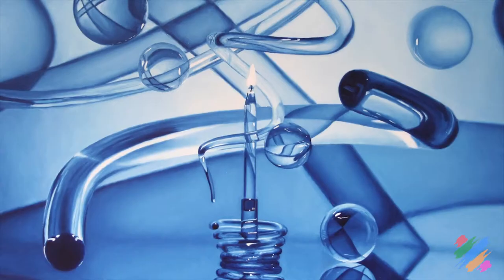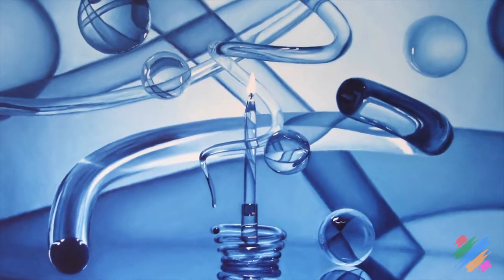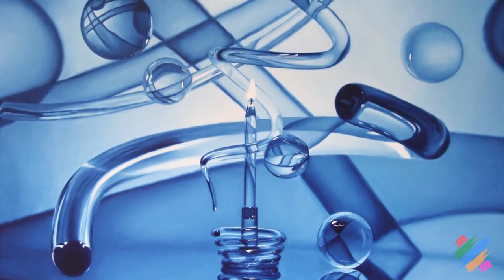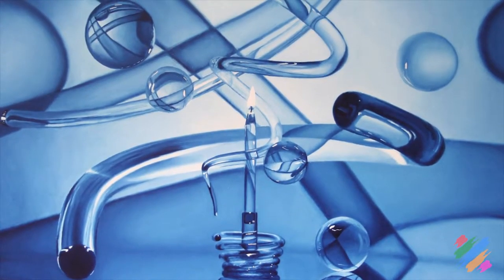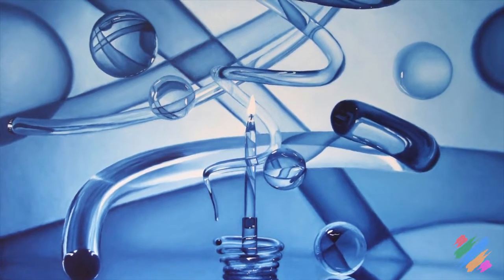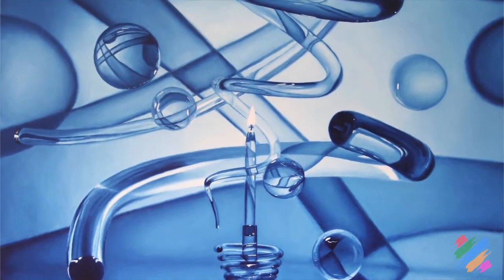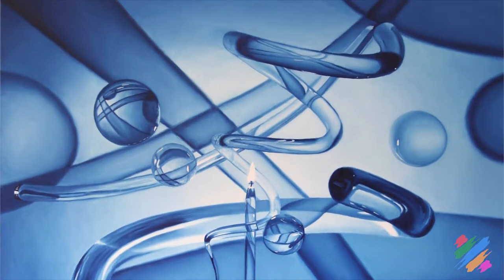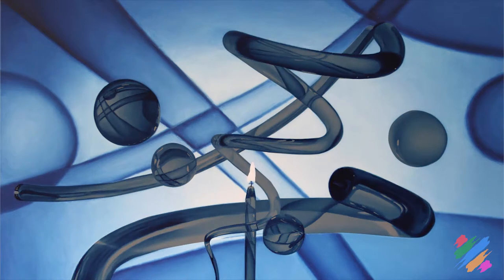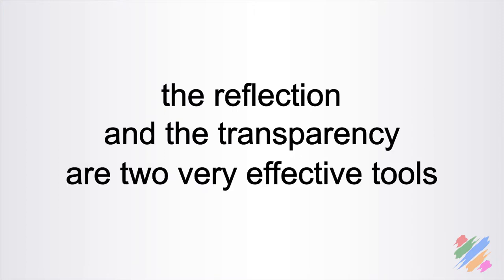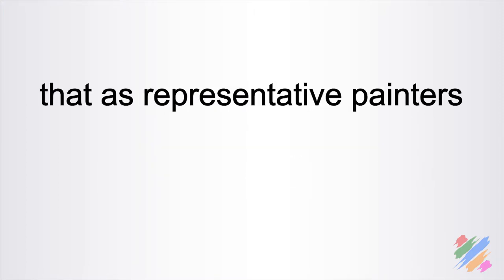If we move our attention to another painting of mine, we can see how the use of transparencies helped give a quite realistic representation of what is definitely a metaphysical object. Playing with the shadows cast by these transparent objects illuminated by candlelight, we get a drawing on the background that was represented with the intent to give a little bit the idea of an abstract work. At the end, we can see how reflection and transparency are two very effective tools that, as representative painters, we can use to create more realistic works.